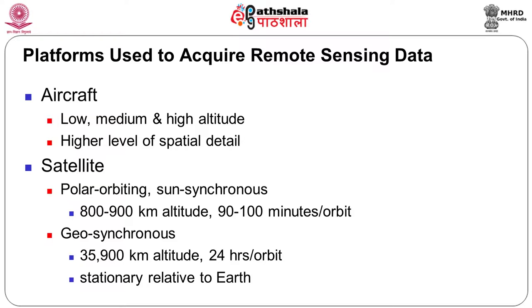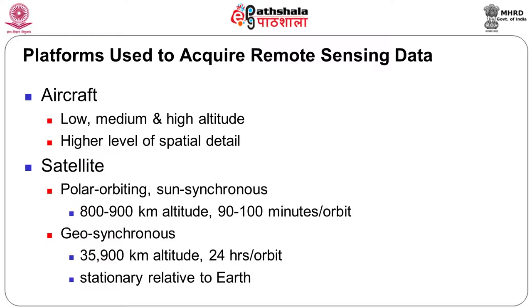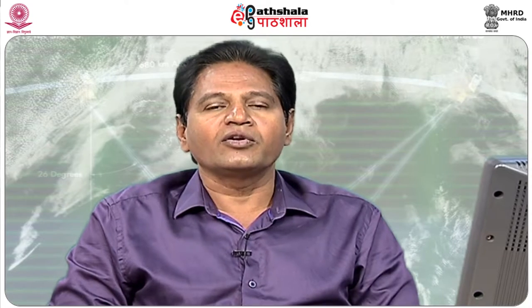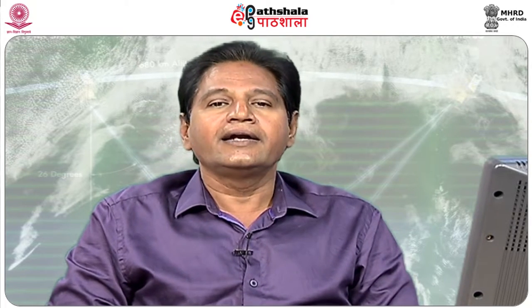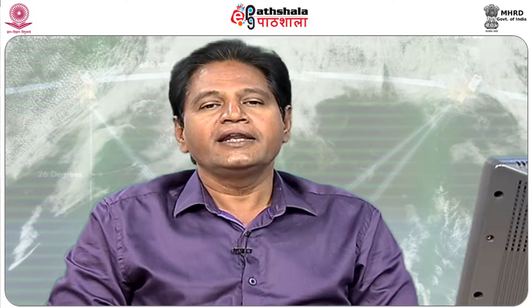Platforms normally used to acquire remote sensing data - those used for acquiring information from space or from air - first and foremost, from a long time, it is the aircraft. Aircrafts could be low, medium and high altitude: 1 kilometer, 2 kilometers, 5 kilometers, 10 kilometers, depending upon the application and the study. These aircrafts are flown at heights of 1 to 10 kilometers above the surface and it is photographed. Nowadays images are also taken using aircrafts; initially for a long time photographs were taken.